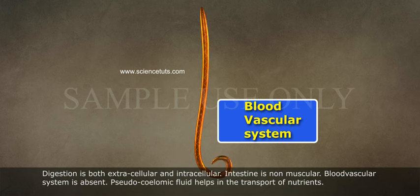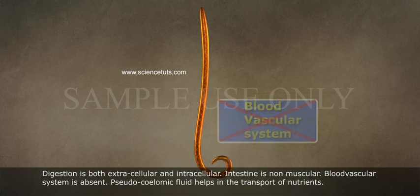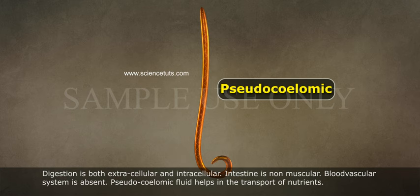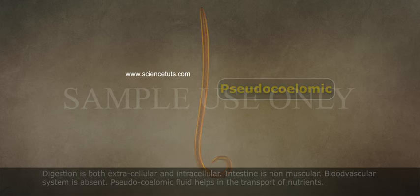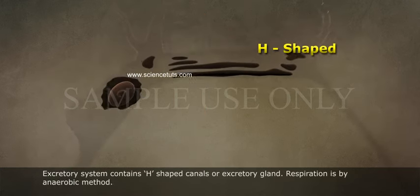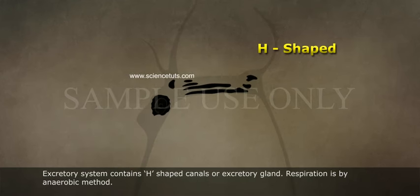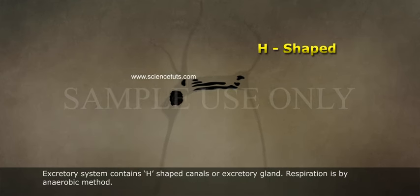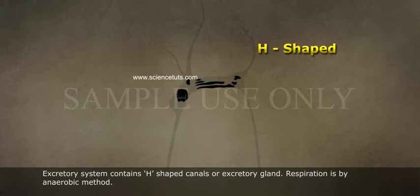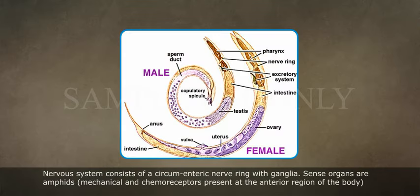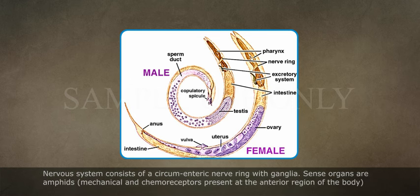A blood vascular system is absent; pseudocoelomic fluid helps in the transport of nutrients. The excretory system contains H-shaped canals or an excretory gland. Respiration is by anaerobic method. The nervous system consists of a circumenteric nerve ring with ganglia. Sense organs are amphids, which are mechanochemoreceptors present at the anterior region of the body.